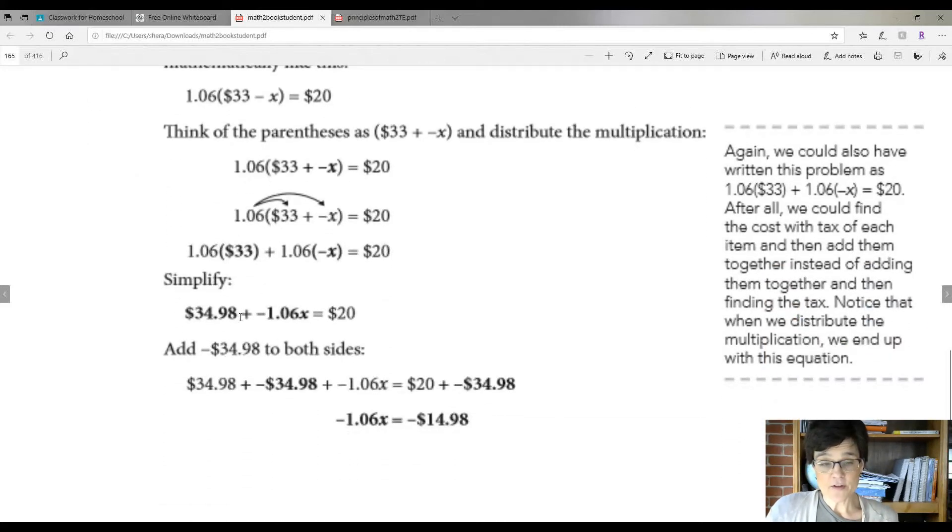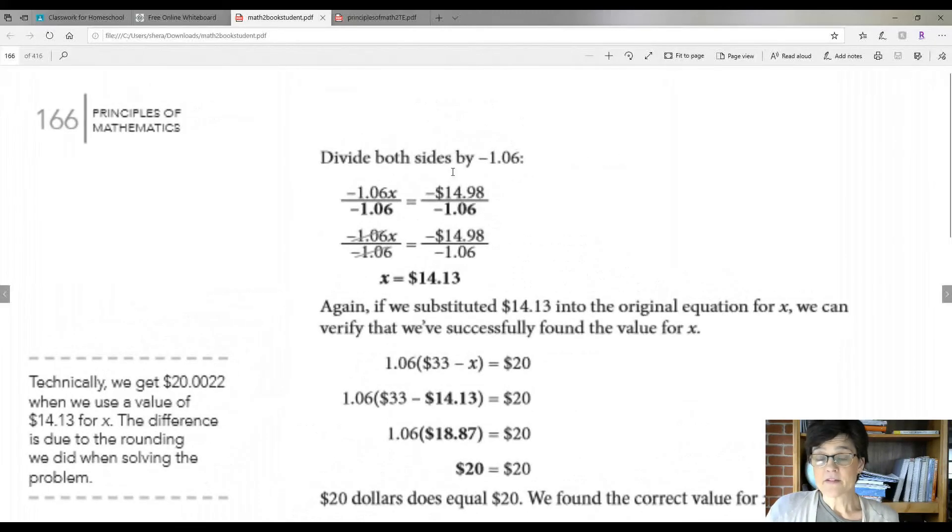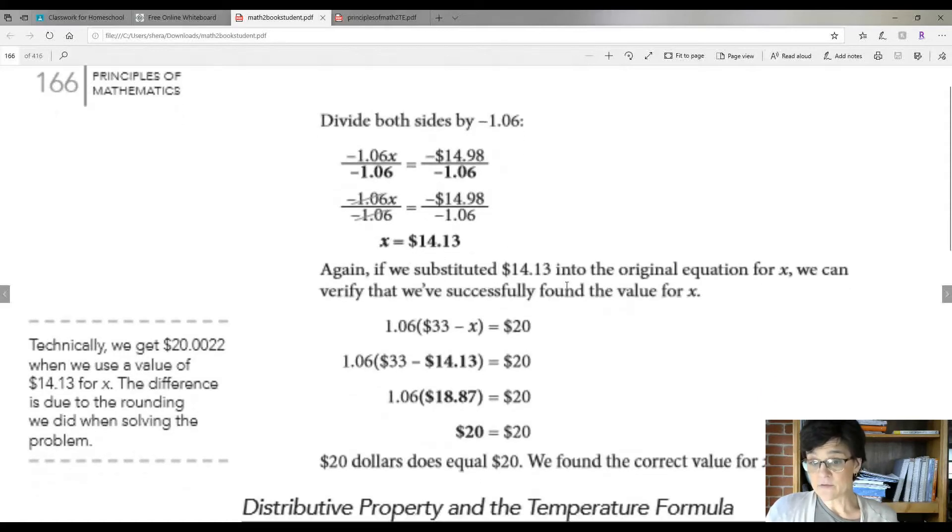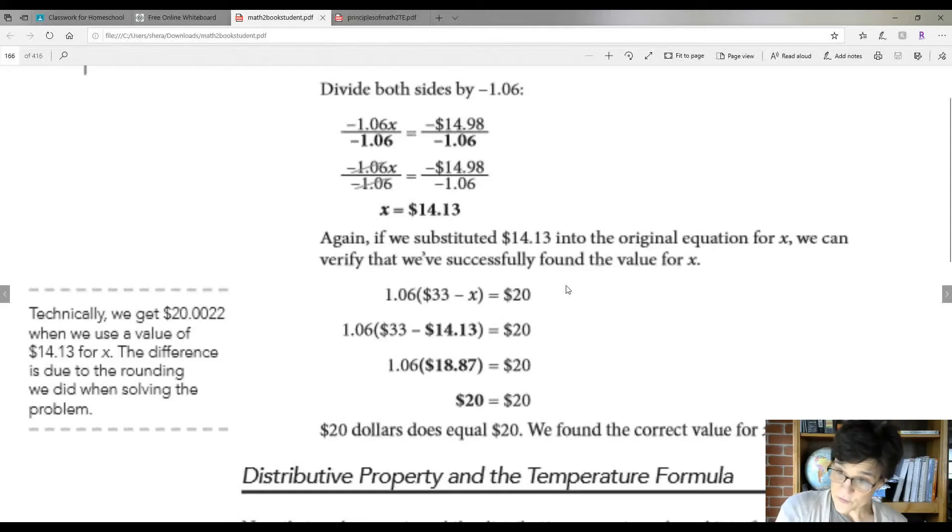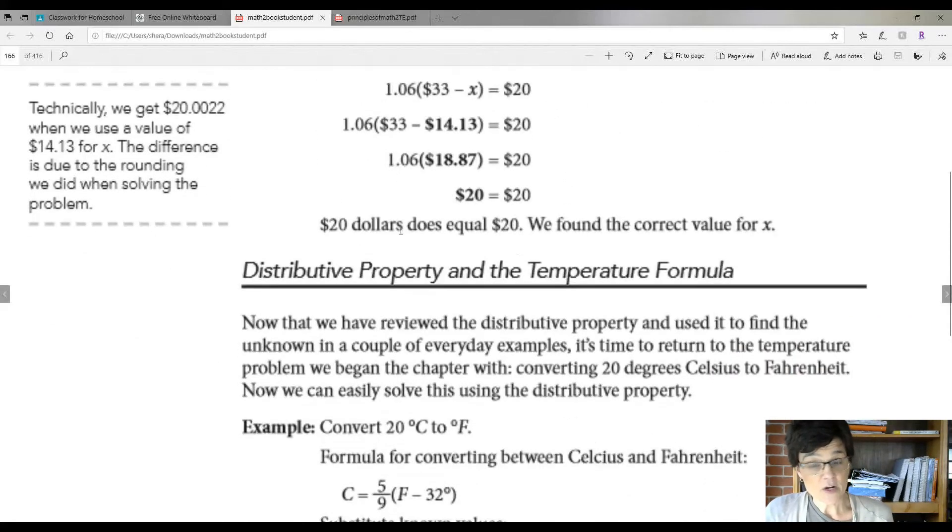You get $14.13. Add negative 34.98 to both sides so that you can get rid of this. And you're left with negative 1.06X equals negative 14.98. Divide both sides by negative 1.06 so that you have X by itself. When you do the calculations, you get $14.13. Now again, if you substituted the 14.13 into the original equation for X, you can verify that you have successfully found the value for X. Because $20 is $20.